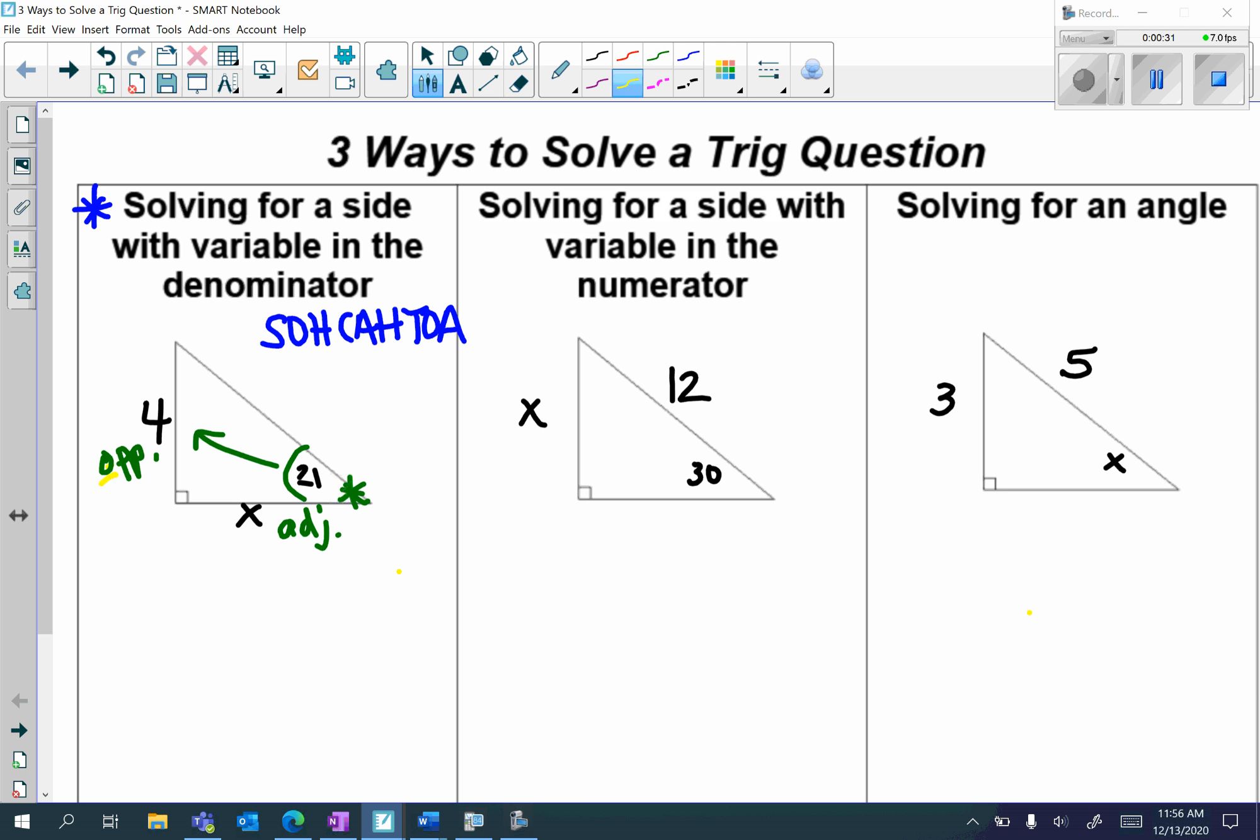So notice I have OA, which out of my SOHCAHTOA has OA? That would be my tangent. So I'm going to have tan of 21 is equal to my opposite, which is 4, over my adjacent, which is x.